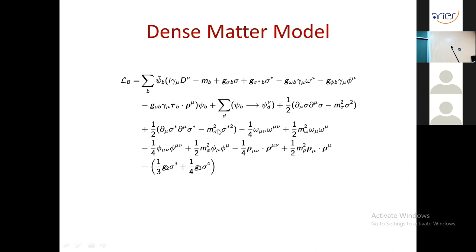Model parameters are determined so that the model reproduces nuclear matter properties at nuclear saturation density. To produce proper compressibility at saturation density, either self-interaction of sigma mesons must be incorporated or the baryon-meson interaction must be density dependent. If non-linear self-interaction of sigma mesons is included, the model is called the non-linear model; if interactions are density dependent, it is the density dependent (DD) model.